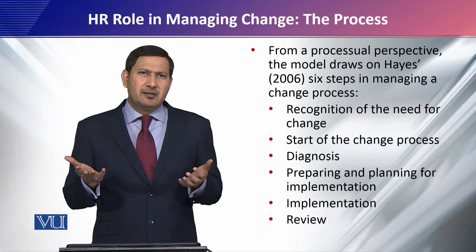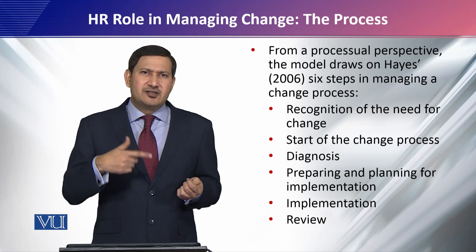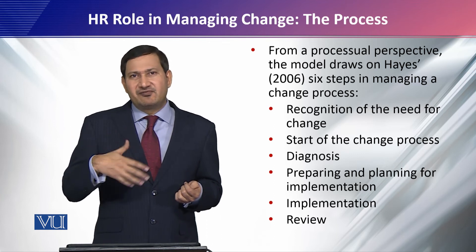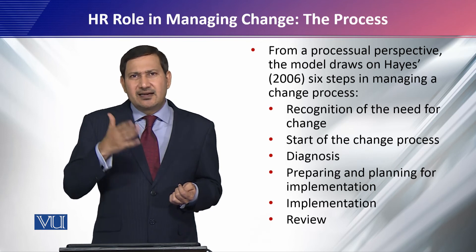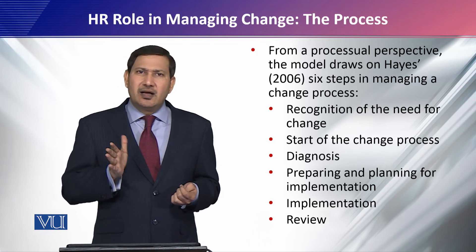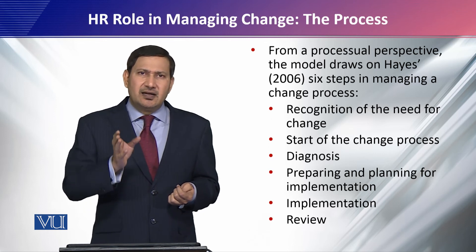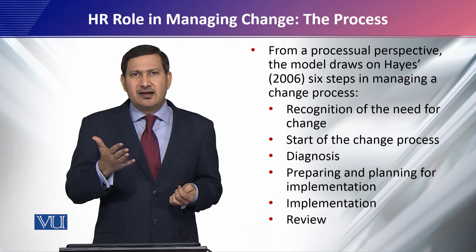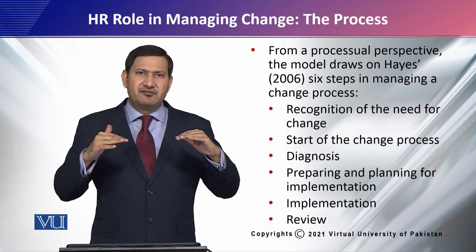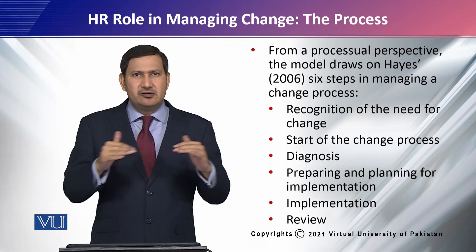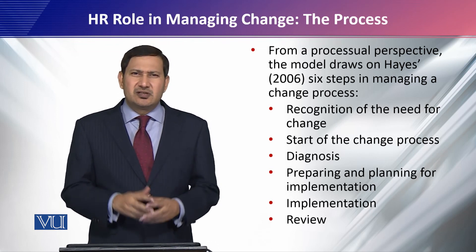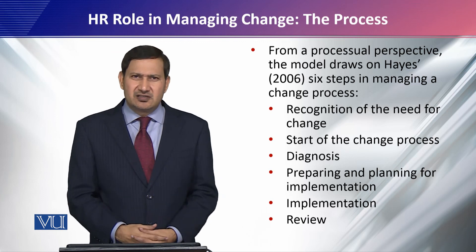For example, if a bank wants to change its software, they run parallel software because financial activities are involved — you cannot stop giving services to customers or halt millions of transactions. So a parallel program is introduced, everything is shifted later, and both systems run in parallel. After that, once everybody is familiar with the new system, new technology, and new software, you can abandon the old one or make an incremental change in the existing one. This is the process suggested by the Alphas et al. study.